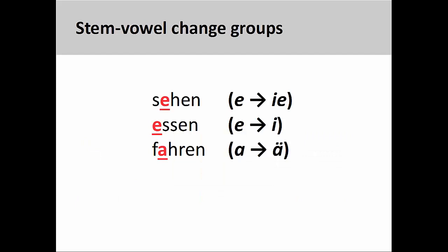A common characteristic of many irregular and strong verbs is a stem-vowel change in the second- and third-person singular. The majority of these verbs can be arranged into just a few groups. One group has a stem-vowel that changes from e to ie, another from e to i, and another from a to a umlaut. The difficult part is knowing whether a verb has a stem-vowel change — this simply must be memorized.